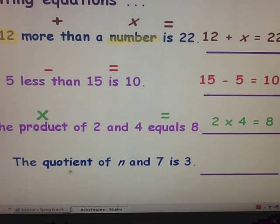And the last example, the quotient of n and 7 is 3. Is is our equal sign, and quotient is our clue word. Quotient means to divide. So we're going to divide n and 7. Remember what I said before on expressions. Whatever is listed first is what's being divided. n is listed first. So our equation is n divided by 7 equals 3.